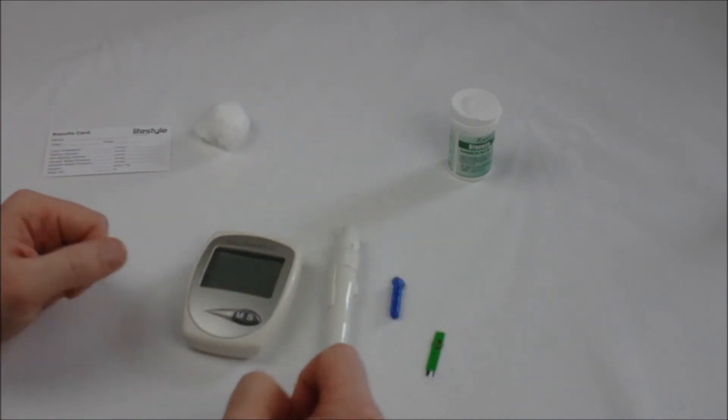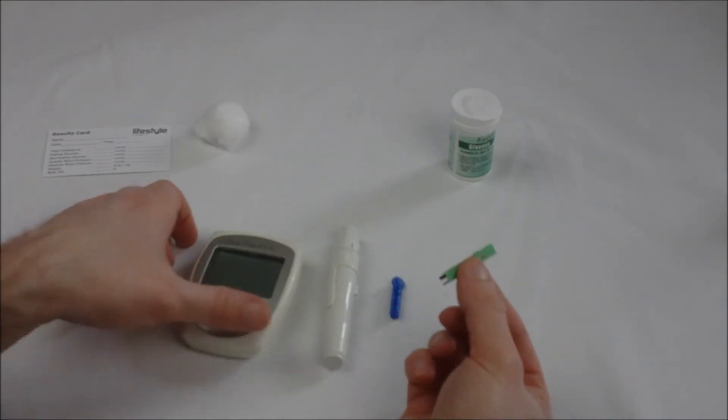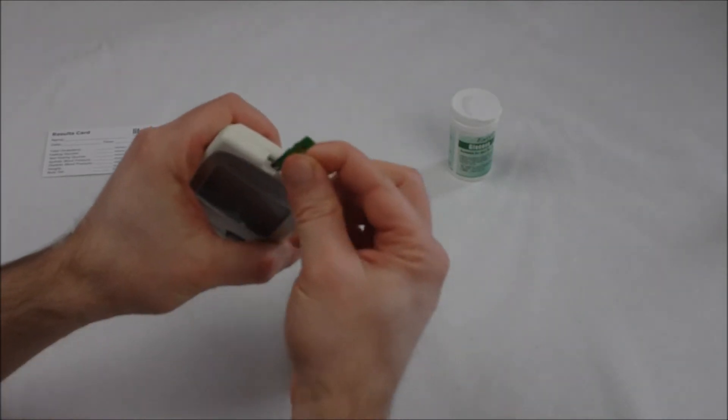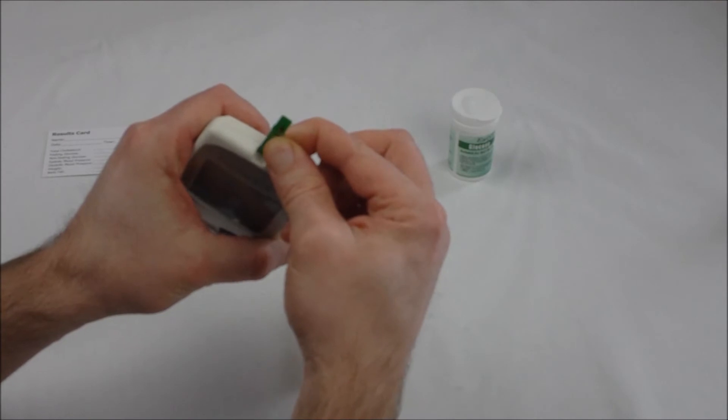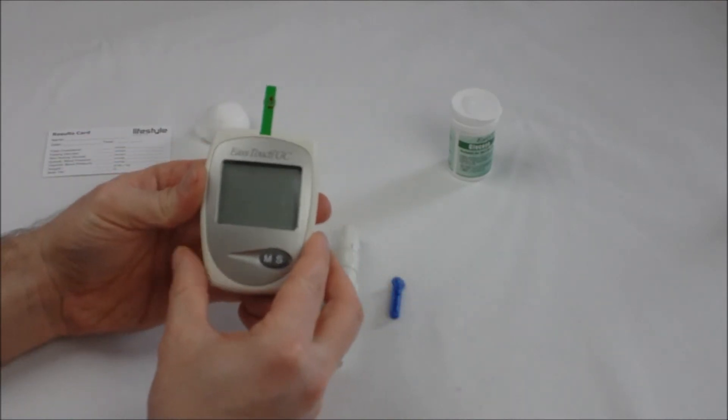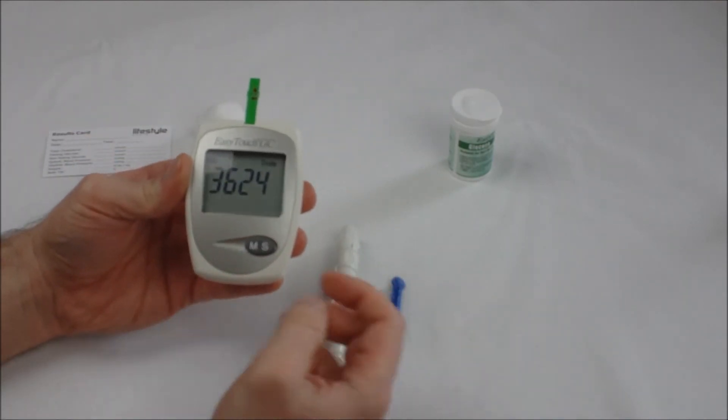Take your test strip and insert the barcode end into the slot at the top center of the monitor. This will spring the monitor into life and will flash a number.